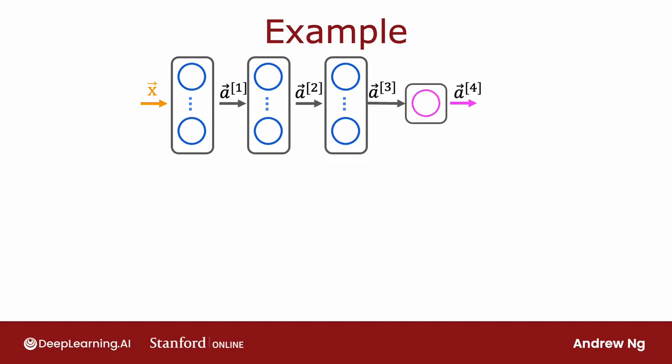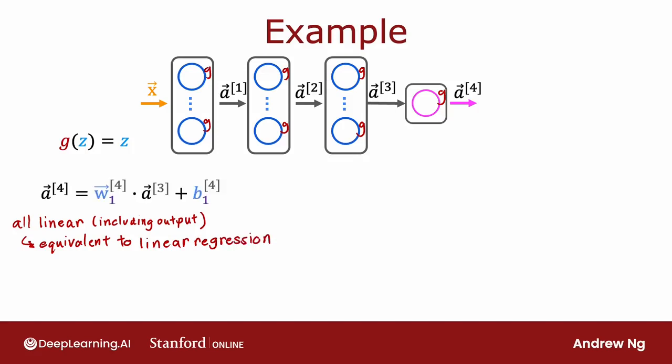So in the general case, if you had a neural network with multiple layers like this, and say you were to use a linear activation function for all of the hidden layers and also use a linear activation function for the output layer, then it turns out this model will compute an output that is completely equivalent to linear regression. The output a4 can be expressed as a linear function of the input features x plus b.